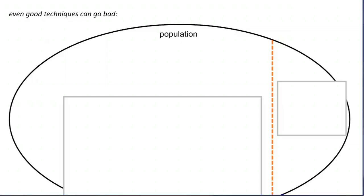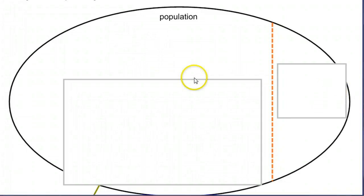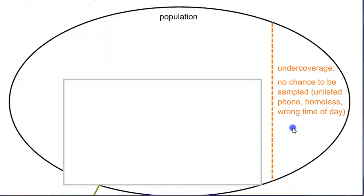Hang with me for this one — it's going to take a little bit to go through, but this diagram can clear up a lot of things about how your sampling can go bad. Imagine your entire population — this big bubble here is the population of interest. For this survey, let's say it's students at one particular high school. Whenever you try to survey the entire population, there's some percentage of the population that's usually unreachable. We call that undercoverage.